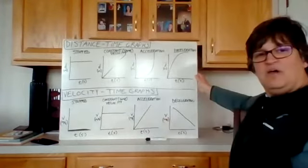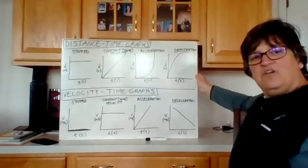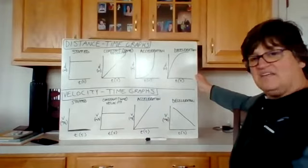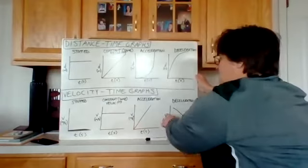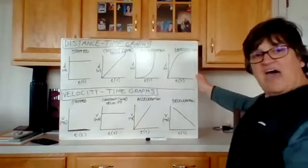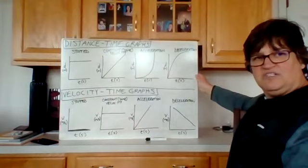Now, on this graph, remember that you have different axes. These are velocity time graphs. These are distance time graphs. That's why they look different.